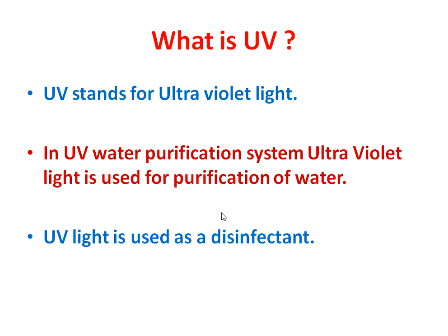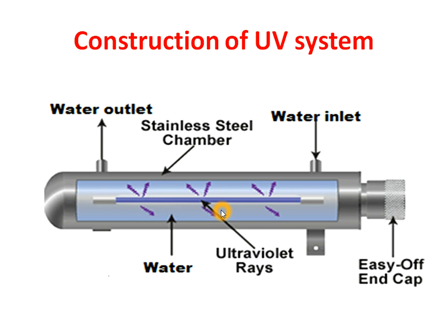Now we see the construction of the UV system. This construction is very simple. It contains a stainless steel chamber. Inside this SS chamber there is a coil sleeve, and inside this coil sleeve we insert the ultraviolet tubular lamp rod.